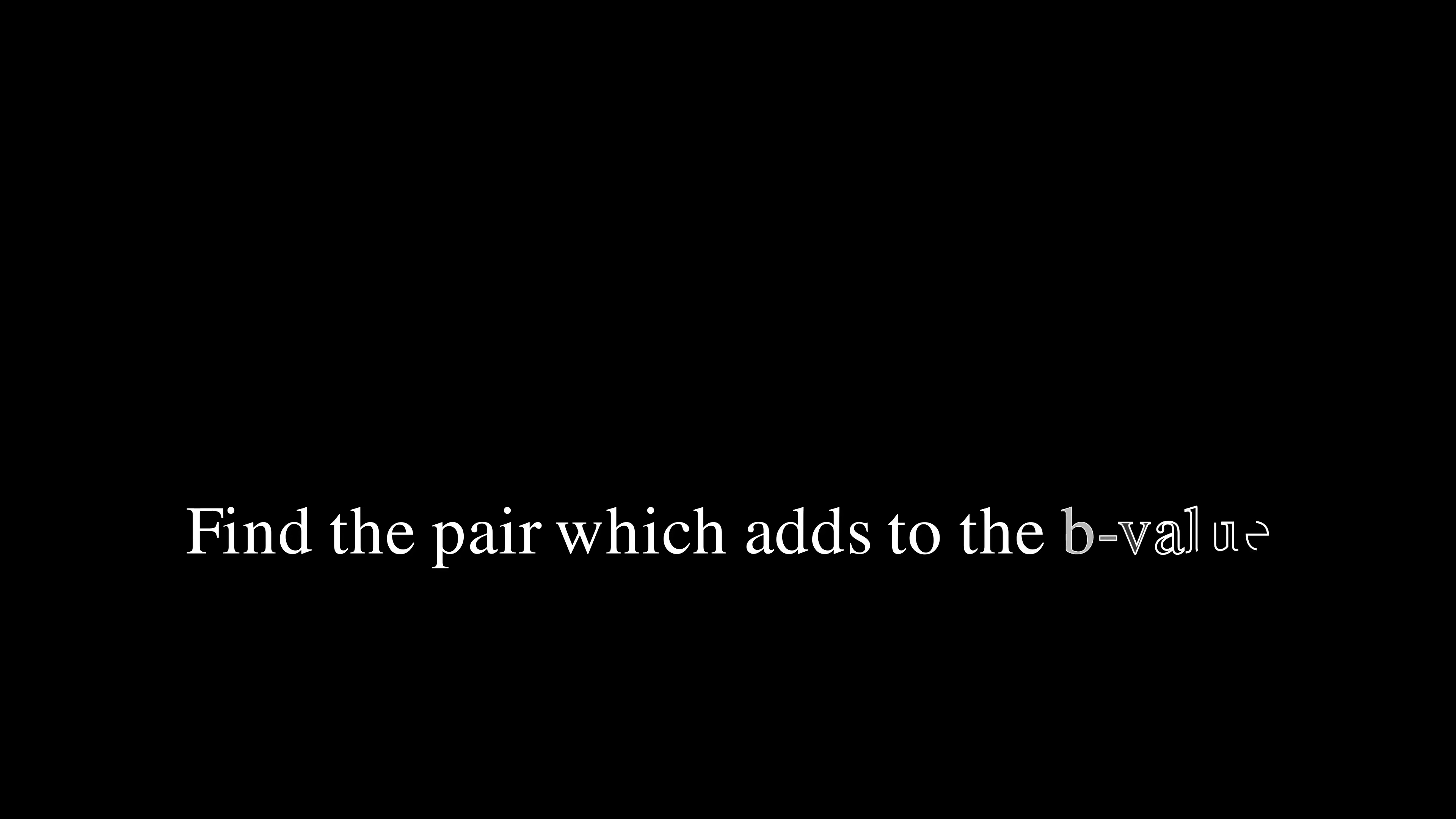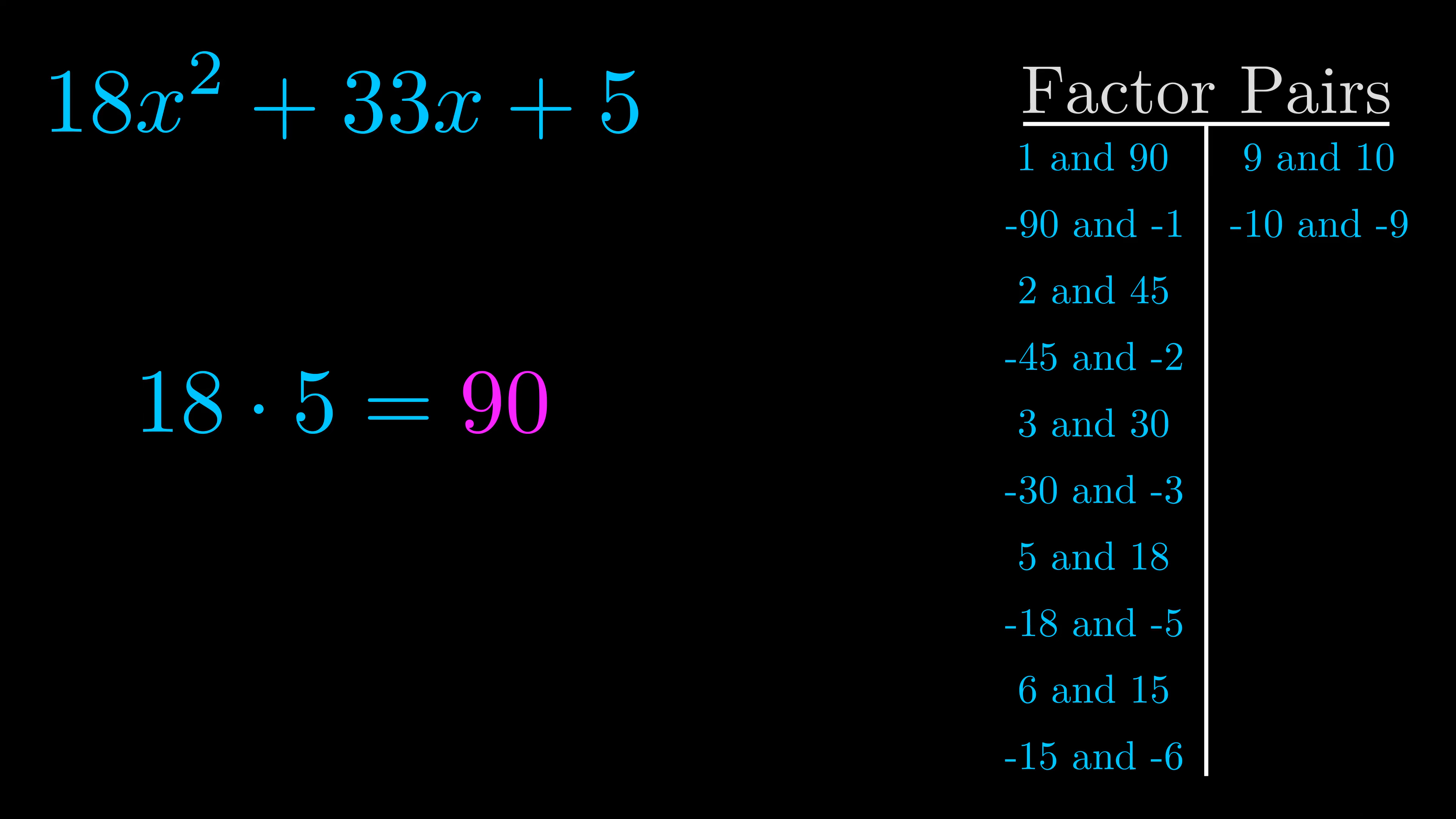The b value is the coefficient on the x term. That's the middle term, the one that we haven't done anything with yet. And really this is the only factor pair that we need.